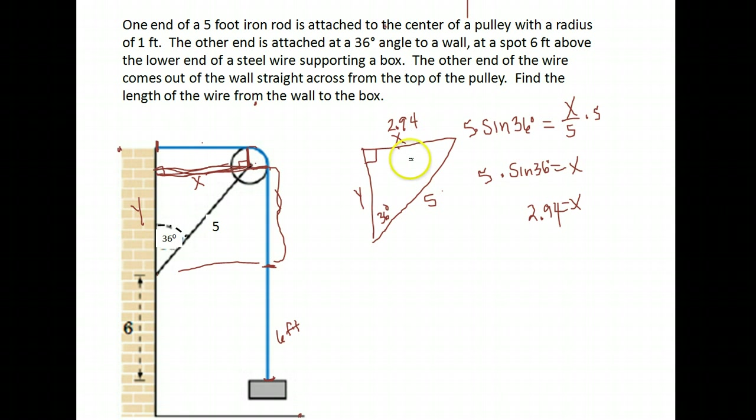Now let's find y. Y is the adjacent side—it's the side touching my 36-degree angle. I still have my hypotenuse here. What uses adjacent and hypotenuse? That is cosine. Cosine of that 36-degree angle is the adjacent side y over the hypotenuse of 5.